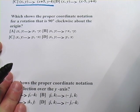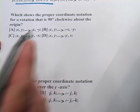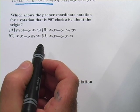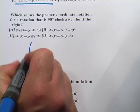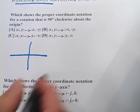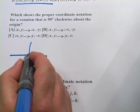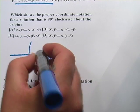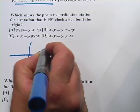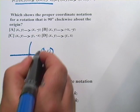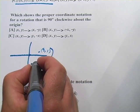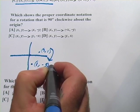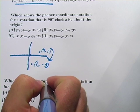Let's try another. This one's a little trickier. It says: which shows the proper coordinate notation for a rotation that is 90 degrees clockwise about the origin? We're going to rotate something about the origin clockwise 90 degrees. So if we start with a point up here — let's say point (3, 1) — and we rotate it, it's going to end up being (1, negative 3). That's a rotation of 90 degrees clockwise.